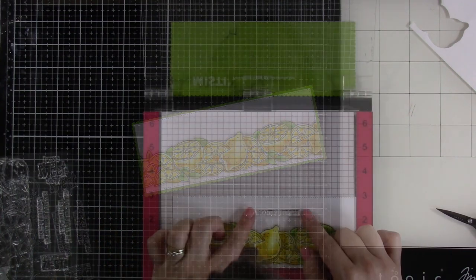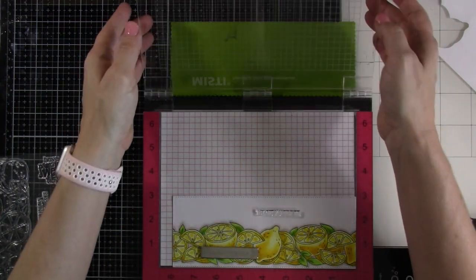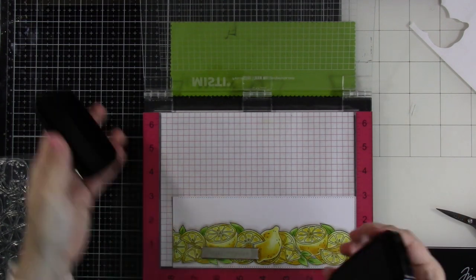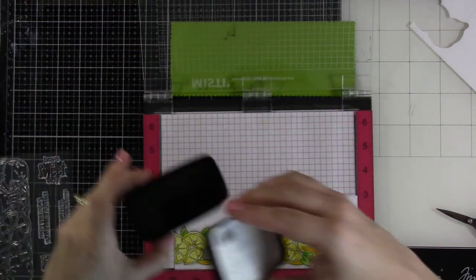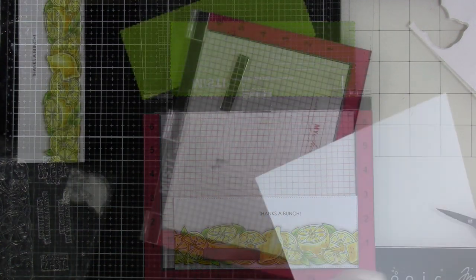And then I went ahead and already did the Sweet Scallop Slimline die on that green. I need to stamp my sentiment, so I'm bringing in the sentiment, inking that up with some VersaFine Clair Nocturne ink, stamp that down, and then I'll pull that out.